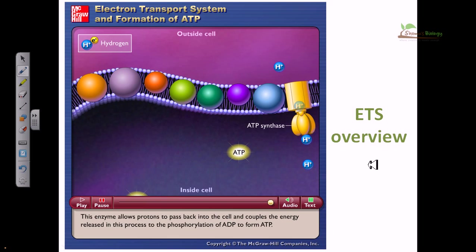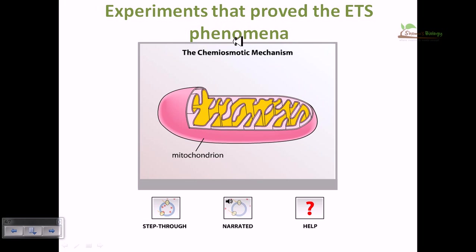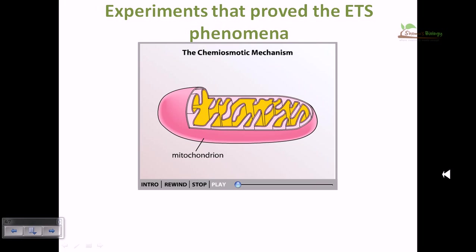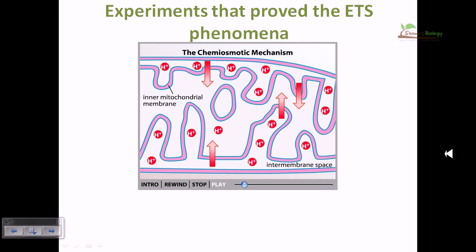Now I'll be looking at the different experiments that prove the electron transport system is actually working inside the mitochondrial cell. In 1961, Peter Mitchell proposed a mechanism called the chemiosmotic mechanism to describe how the mitochondrion fuels ATP production. He proposed that a gradient of protons forms across the inner mitochondrial membrane and that the movement of protons down this gradient into the matrix provides the energy to produce ATP.